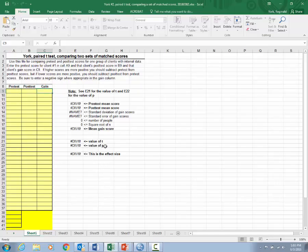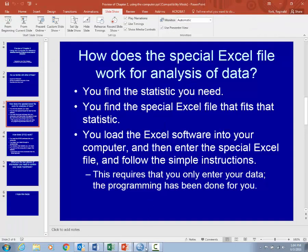Then you enter the gain score here. Then here is a cell that shows you the value of p. Here's one that shows you the value of t. This is the effect size and so forth. So all you do is once you know which one you want to use, you simply load that particular file. Enter your pre-test scores here, enter your post-test scores here, and look for your results over here. So that's pretty simple.